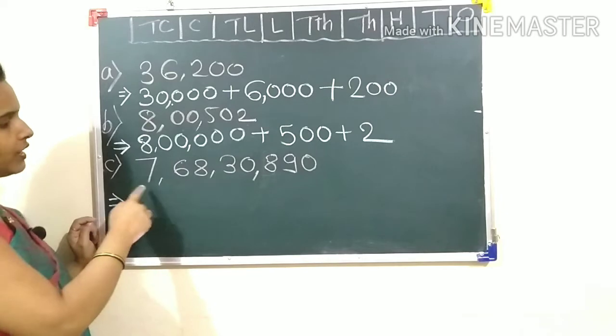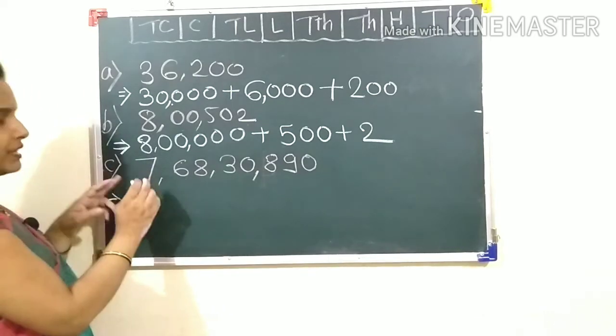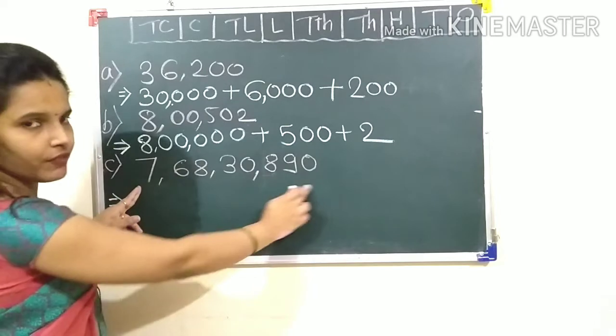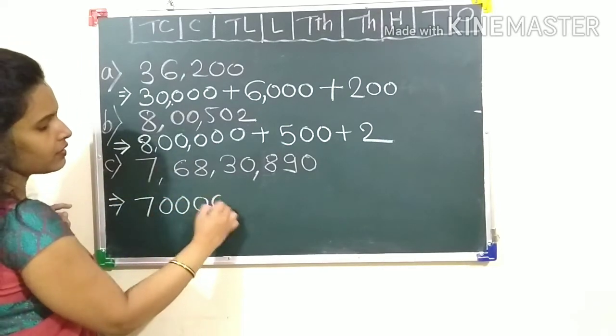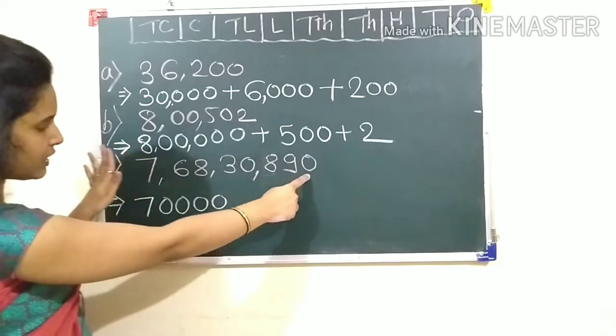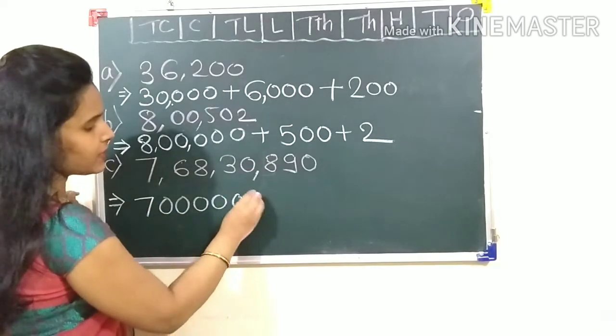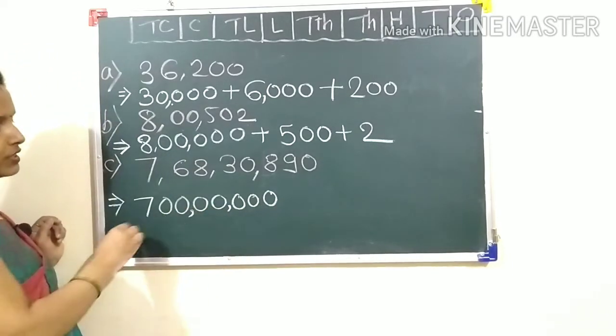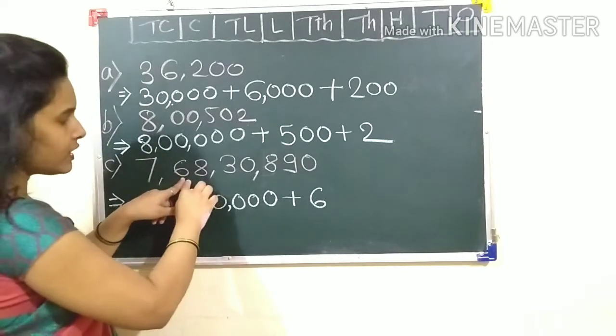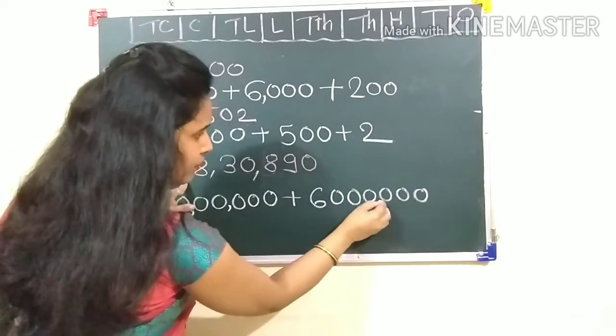Now this is a little big number, but it's easy. How do you read this number? One, tens, hundred, thousand, ten thousand, lakh, ten lakh, and crore. This is crore place. So seven crore means seven with seven digits after it. So write seven with seven zeros.